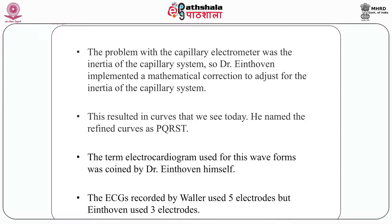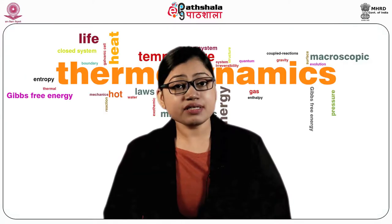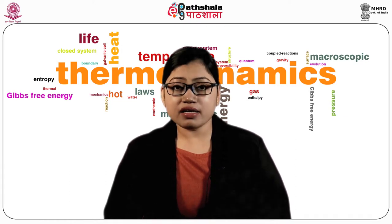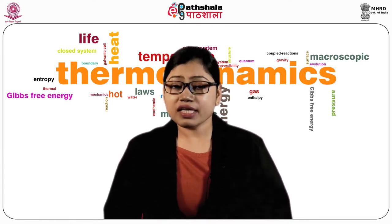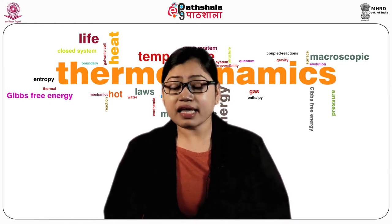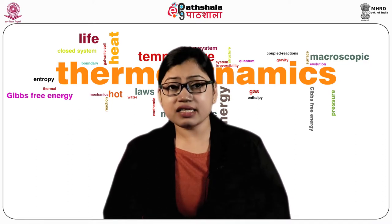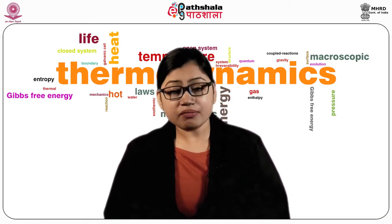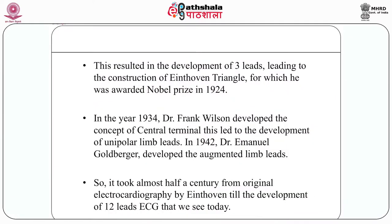The term electrocardiogram used for these waveforms was coined by Dr. Einthoven himself. In 1901, he successfully developed a new string galvanometer with very high sensitivity. As the string galvanometer found use in various clinical scenarios, lots of improvements were made to make it more practical. The ECG recorded by Waller used five electrodes, but Einthoven used three electrodes, leading to the development of three leads and the construction of the Einthoven triangle, for which he was awarded the Nobel Prize in 1924.